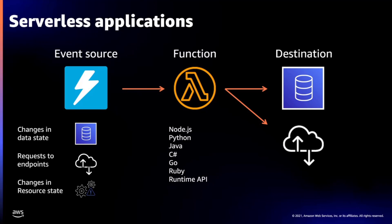On either side of your Lambda function there are two components. There's the event source that invokes your Lambda function and causes your code to execute — something that happened, like an item dropped into an S3 bucket, an item put into a DynamoDB table, or a payment processed through a third party like Stripe. Then you have your destination — what your function can talk to — databases, data stores, storage services, both inside and outside AWS.